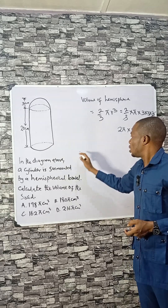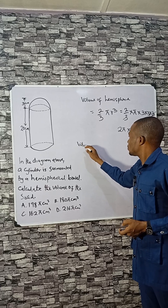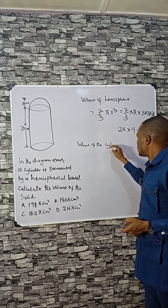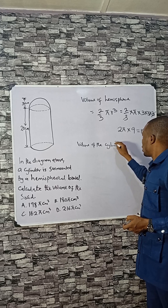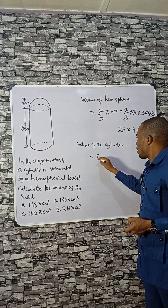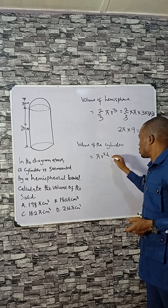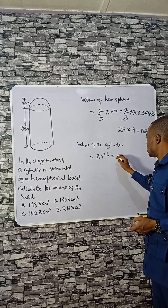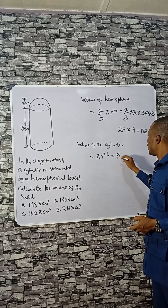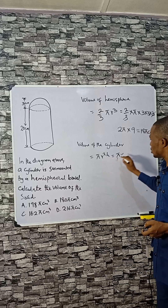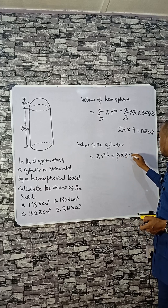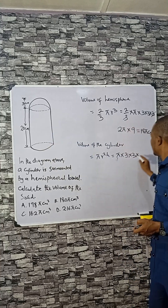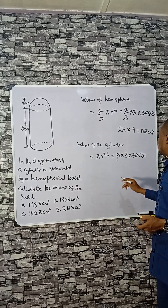Now, the volume of the cylinder is given by pi r squared h. Expressed in terms of pi, that is pi times r squared, where r is 3. The height of the cylinder is 20.